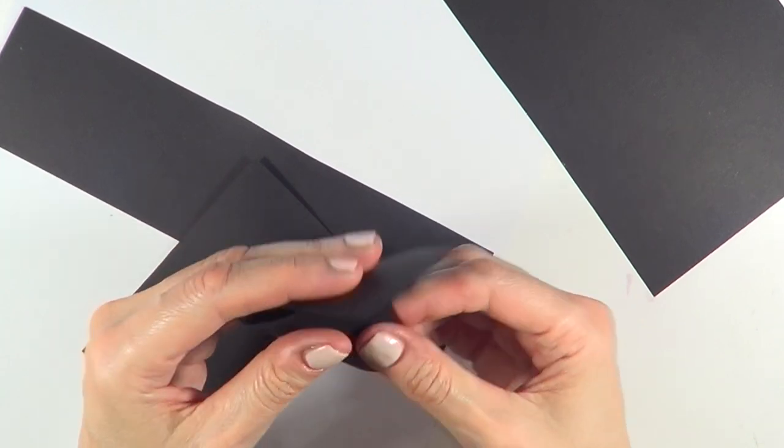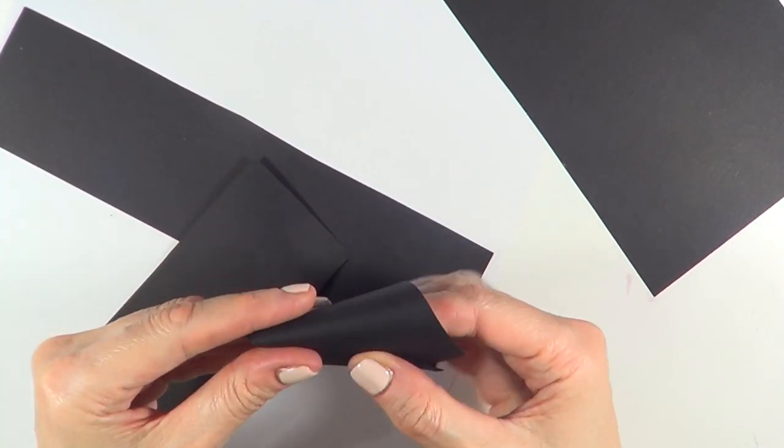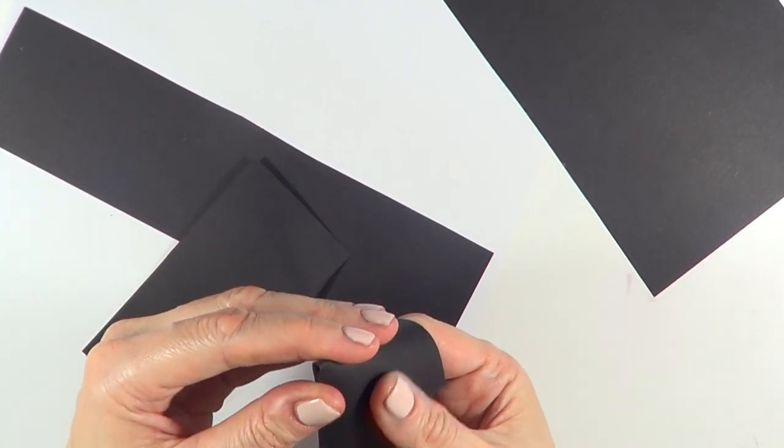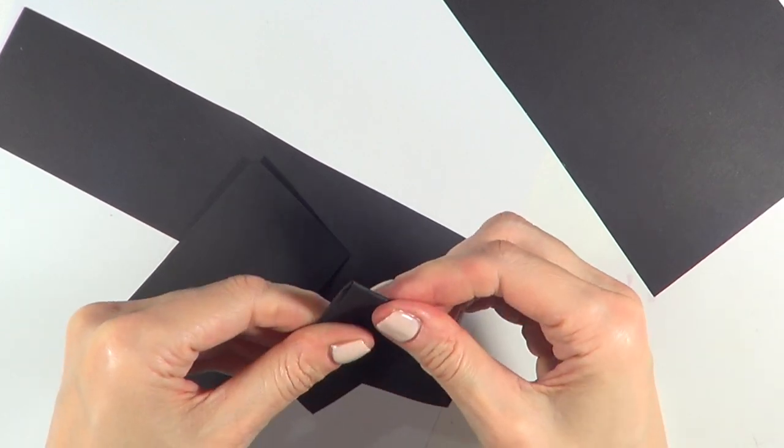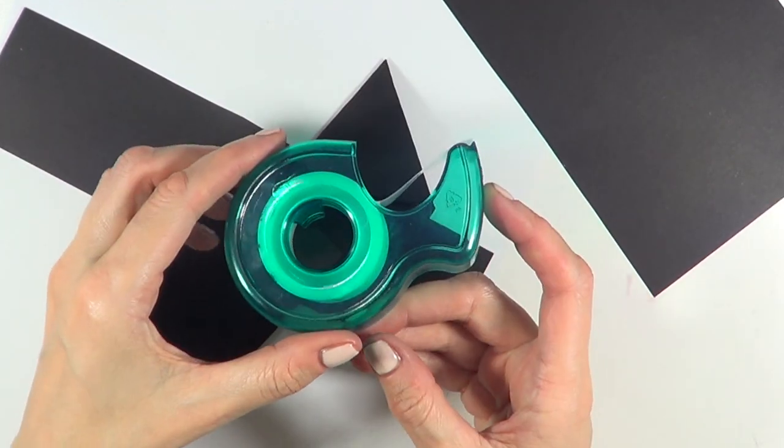From those pieces, I'm going to make cones by folding the edges and forming a triangle. Then I'll take some tape and secure it so it doesn't move.